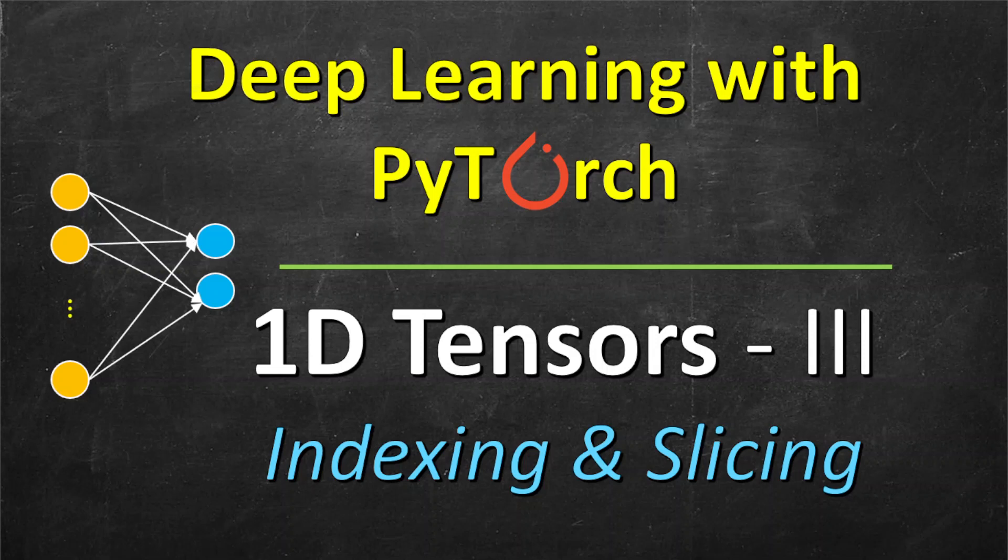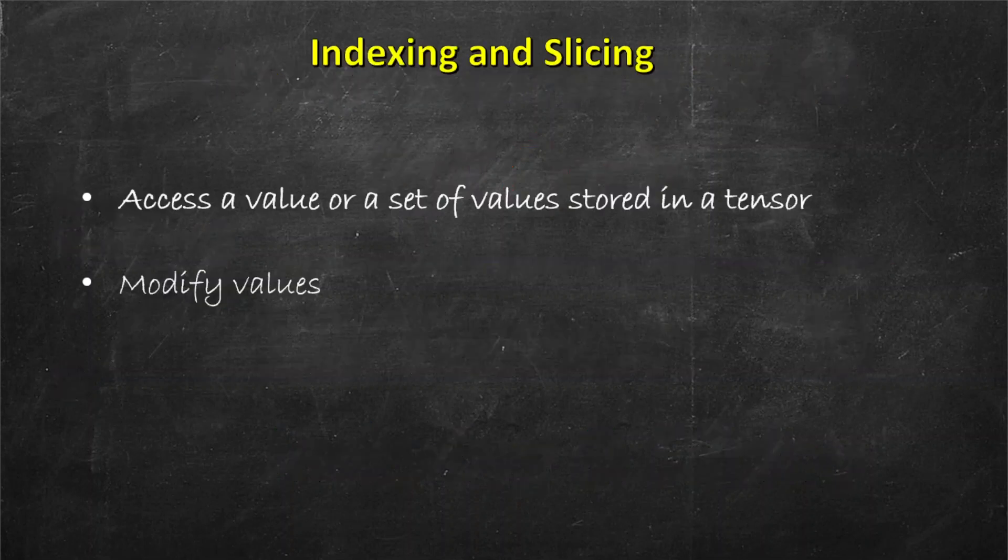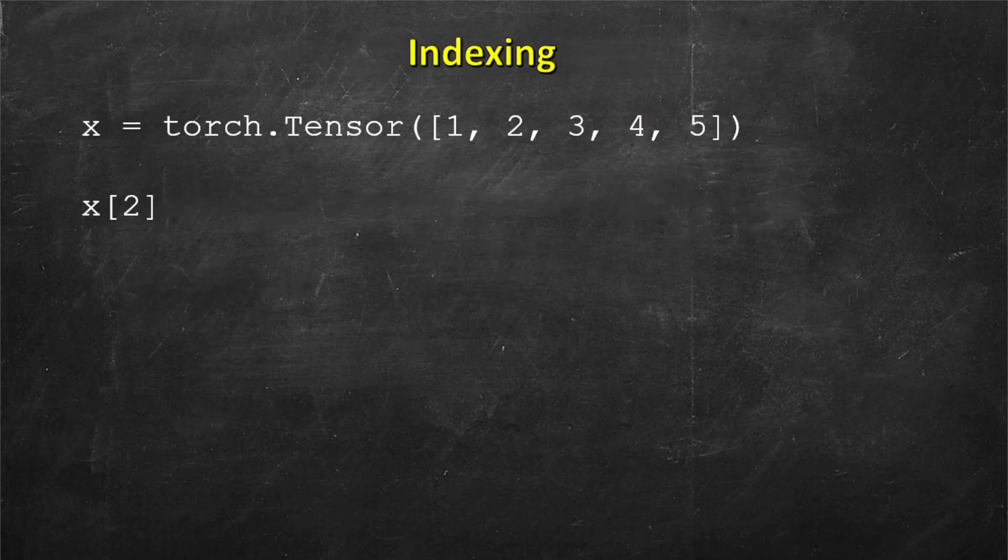Let us continue our discussion on 1D tensors. Today we will look at indexing and slicing. These can be used to access a value or a set of values stored in a tensor and these can also be used to modify those values.